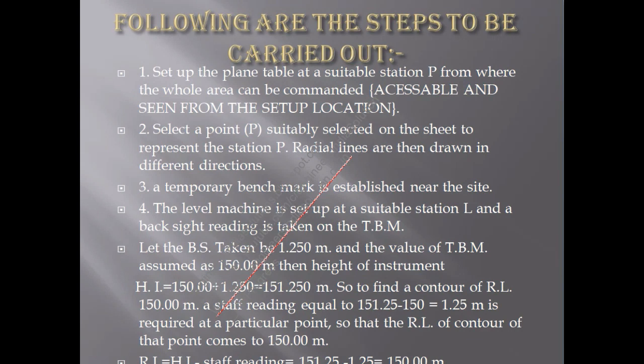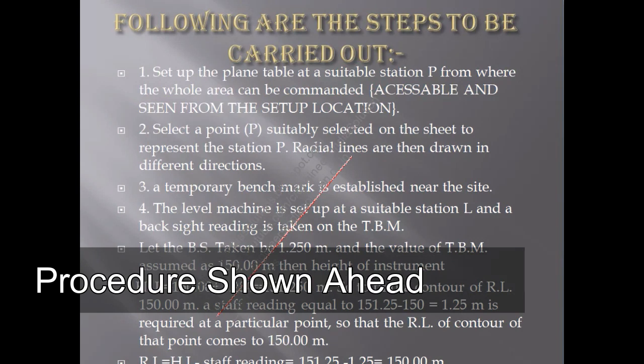Here is the procedure. Right in the beginning we select a suitable station P from where the whole area can be commanded or it is accessible from that location. Then after selecting a point on the sheet, we present it onto the plane table and draw radial lines in different directions.